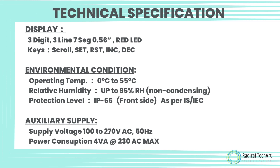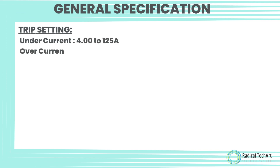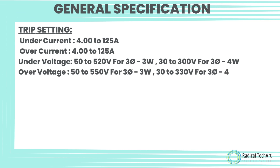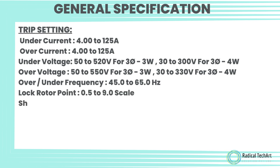Auxiliary Supply — Supply voltage: 100 to 270 Volt AC, 50 Hz; Power consumption: 4 VA at 230 Volt AC max. Trip Settings — Under current: 4 to 125 A; Over current: 4 to 125 A; Under voltage: 50–520 V (3-phase 3-wire), 30–300 V (3-phase 4-wire); Over voltage: 50–550 V (3-phase 3-wire), 30–330 V (3-phase 4-wire); Over/Under frequency: 45–65 Hz; Lock rotor point: 0.5 to 9 scale; Short circuit: 1 to 9 scale; Unbalance: 5 to 60 percent.